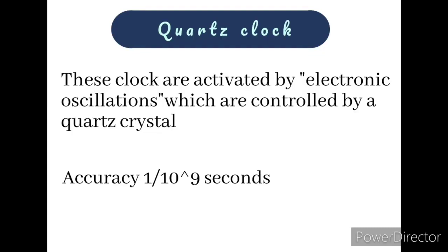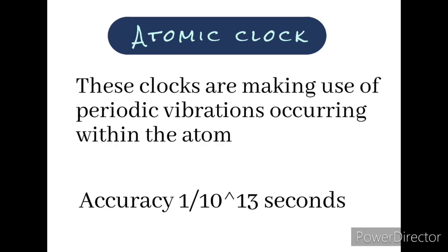Quartz clock is more accurate than mechanical clocks. Its accuracy is one second in every 10 to the power of 9 seconds.